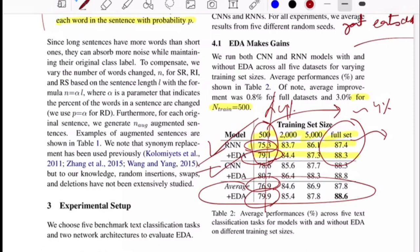They said since long sentences have more words than short ones, they can absorb more noise while maintaining their original class label. The number of words you choose depends on the sentence length. The longer the length, the more noise can be injected compared to shorter sentences. They define a formula: n equals alpha times l, where l is the sentence length, n is the number of words you change for each technique, and alpha is the parameter that indicates the percentage of words in a sentence that are changed. For example, if you have a sentence of 10 words and your alpha is 0.1, then n would become 0.1 times 10 which equals 1, so one word per 10 words will be used for augmentation purposes.